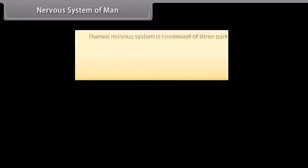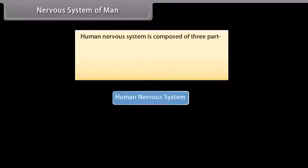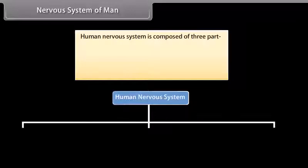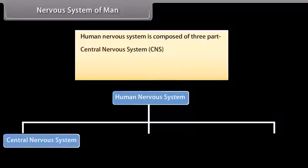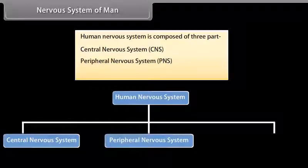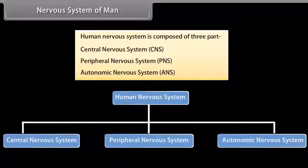The human nervous system is composed of three parts: Central nervous system (CNS), Peripheral nervous system (PNS), and Autonomic nervous system (ANS).